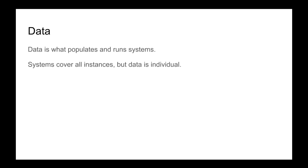Data is what populates and runs the systems. Systems cover all instances, so all cows have the same system. All cows have milk production, eat grass at some volume, have some stamina. Our data determines which cows are better at milk production, have more stamina, eat more grass. That's the difference between systems and data.